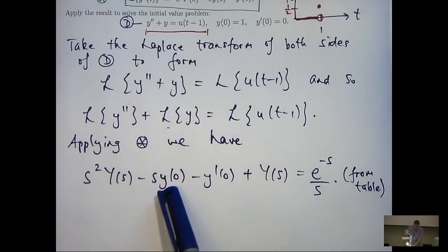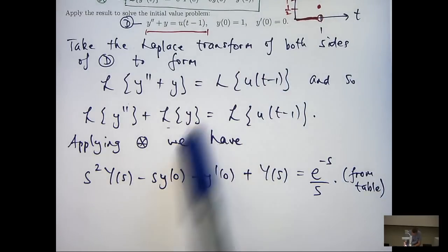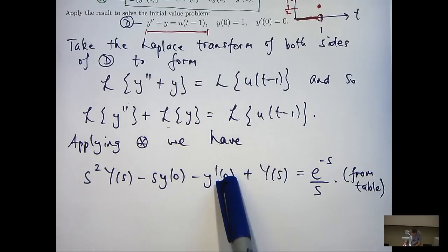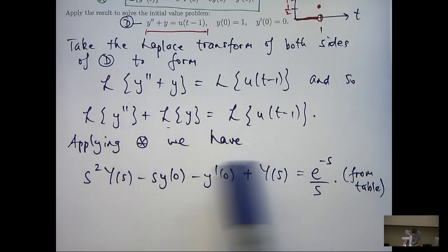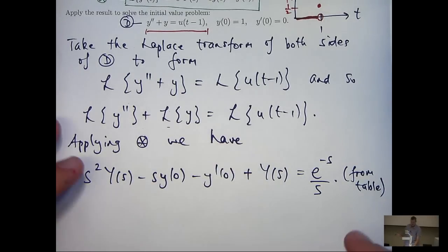So now what I can do is substitute in the initial conditions here and here, so I'm incorporating the initial conditions. And then what I'd like to do is rearrange and solve for big Y of s.